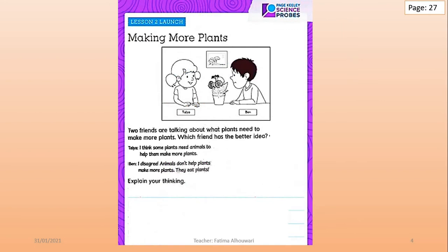Let's go back to page number 27. There are two friends talking about what plants need to make more plants, and you will decide which friend has the better idea. Talia said, 'I think some plants need animals to help them make more plants.' What do you think? Is this correct? Think about it.